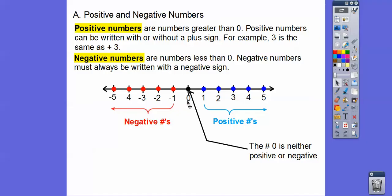The number zero is neither positive nor negative. Negative one, negative two, negative three, negative four, negative five — this arrow means it keeps going, all the way to negative infinity. On the other side: one, two, three, four, five, six. The farther you are to the right, the bigger the number is. Negatives kind of work backwards — negative five is actually less than negative four because it's to the left. The further you go to the left, the smaller the numbers get.